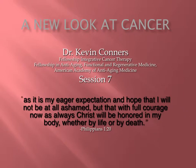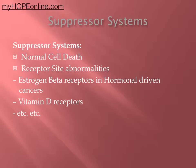Hello, everybody. This is Dr. Kevin Connors. Welcome to session seven, a new look for cancer. We've been talking about suppressor systems. Normal programmed cell death is one suppressor system — that is how your body deals with a damaged cell of any kind. If the damage has been in the DNA in the replication phase, the cell should undergo apoptosis simply because of that. So that is a protective measure.